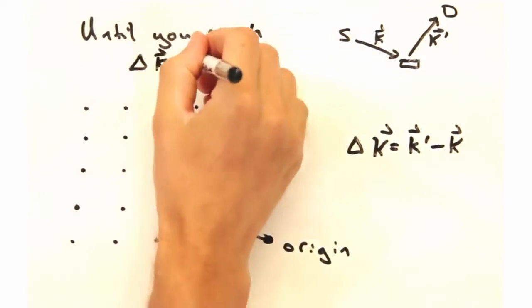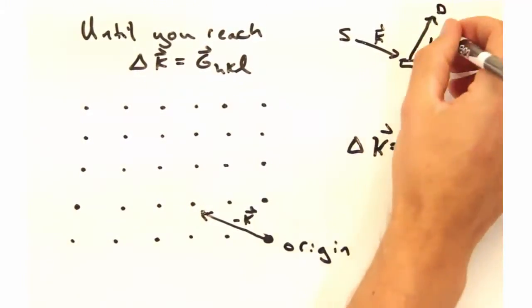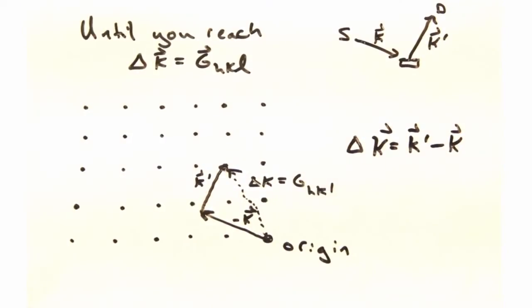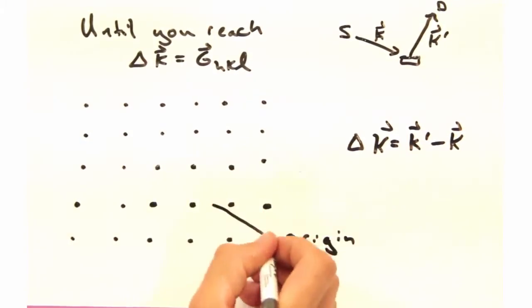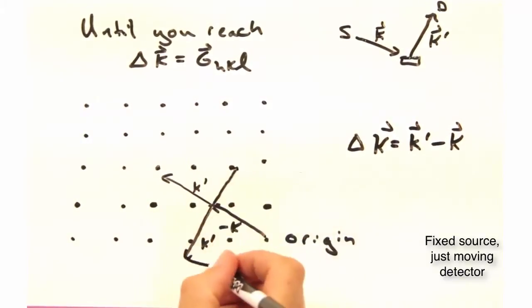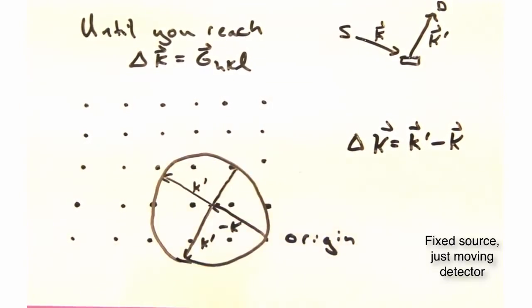If we continue moving the detector, we may eventually reach a configuration where delta k equals g at some hkl. And as we rotate our detector through all possible configurations, we effectively carve out a circle, or sphere in 3D.